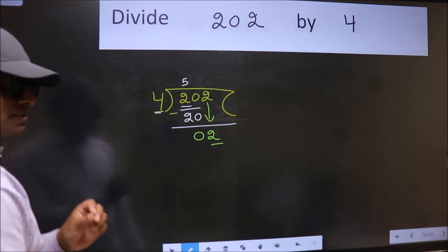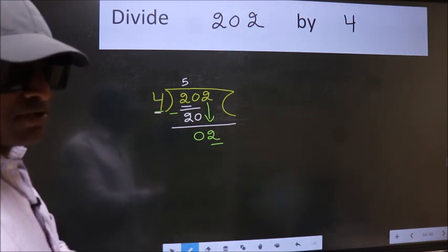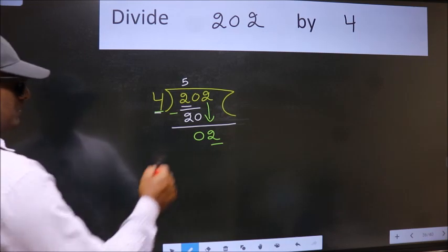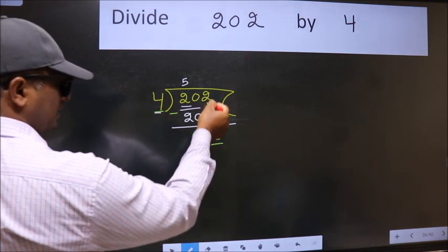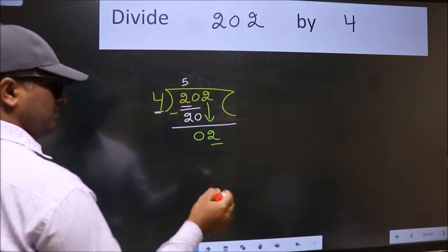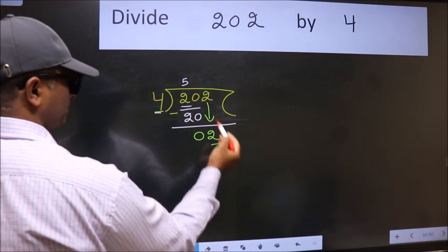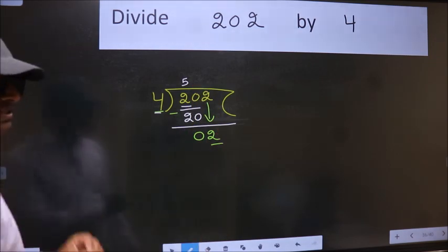Which is wrong. Why is it wrong? Because just now you brought this number down, and in the same step, you want to put dot, take 0. Which is wrong.